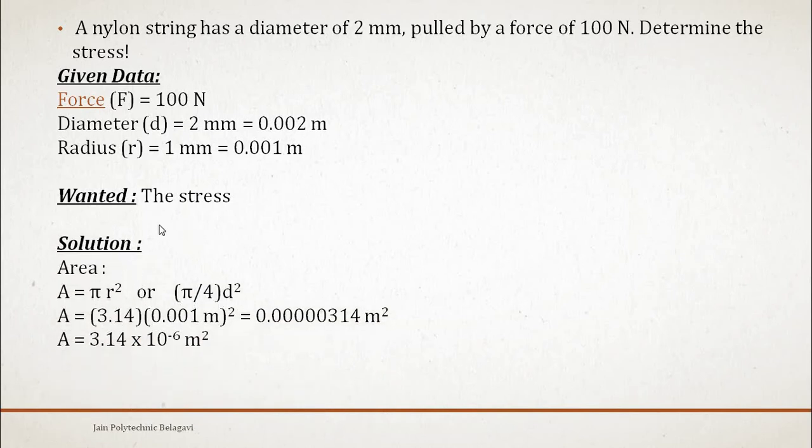So what is the solution? First and foremost thing you have to calculate the cross section of the nylon string. How to find it? Cross section of a nylon string, they have given the diameter, it means it is circular in cross section. So the area of the circle formula is given by π/4 d² or you can write it directly as πr².